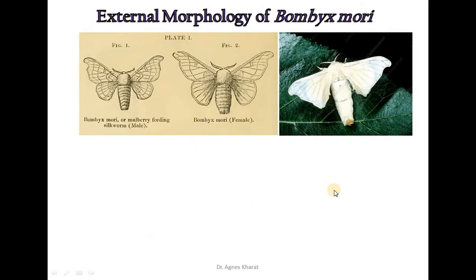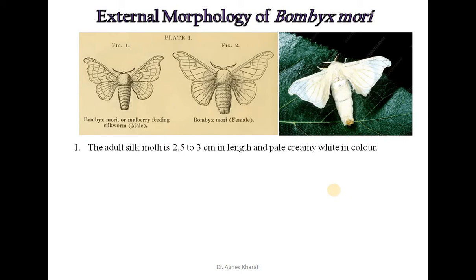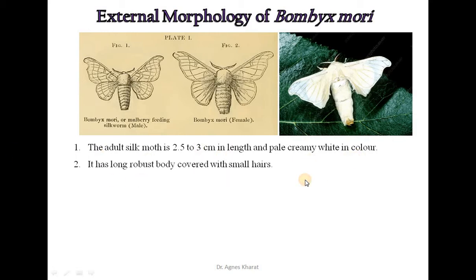Bombyx mori is commonly called the silk moth. The external morphology of Bombyx mori is as follows. The adult silk moth is 2.5 to 3 cm in length and pale creamy white in colour. It has a long robust body covered with small hairs.